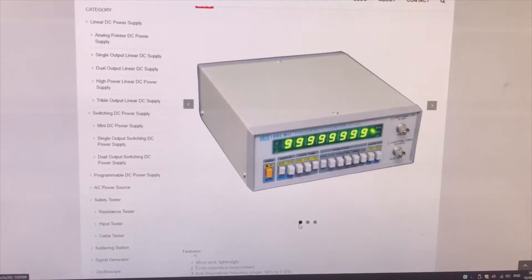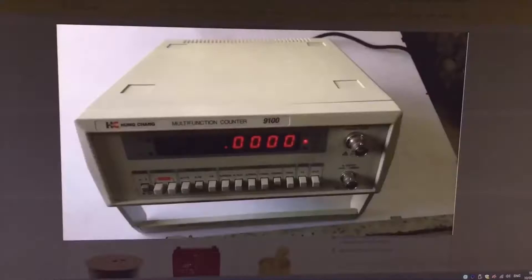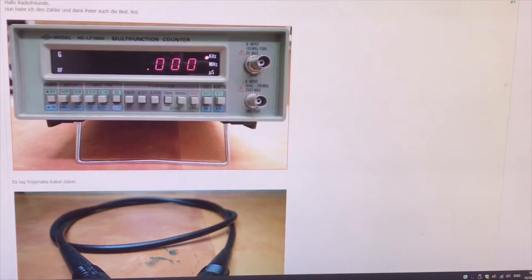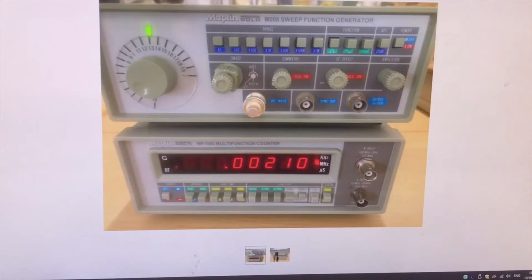Here we have the Long Y TFC 1000. It also comes as the Hung Chang 9100, and it comes as an HCL F1000, not sure what the brand is. And it comes as a Maplin MF 1000. As you can see, the housing looks very similar. Of course, we're talking about the bottom one.